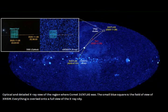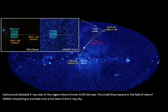What we're looking at is an image by JAXA, optical and detailed X-ray view of the region where Comet 3I Atlas was. The small blue square is the field of view of X-rism, everything is overlaid into a full view of the X-ray sky.